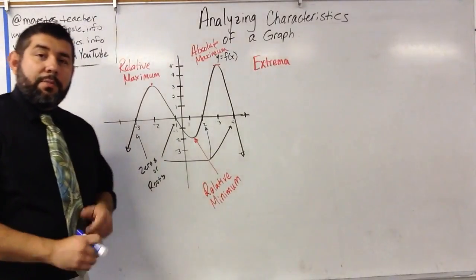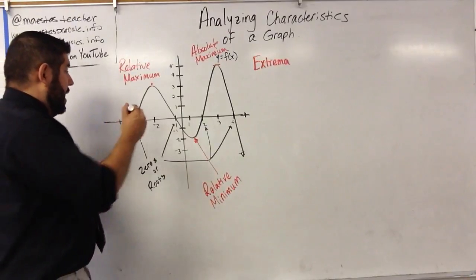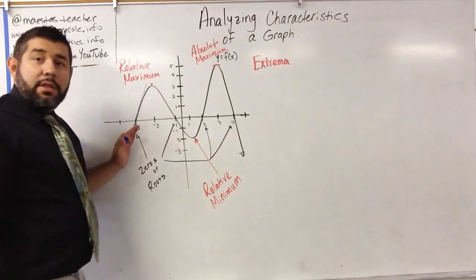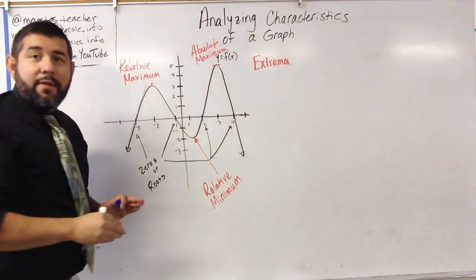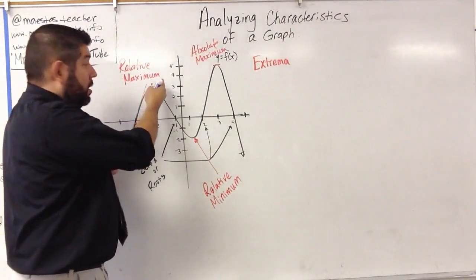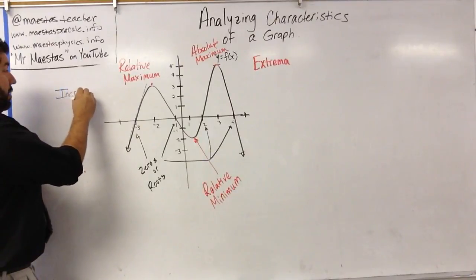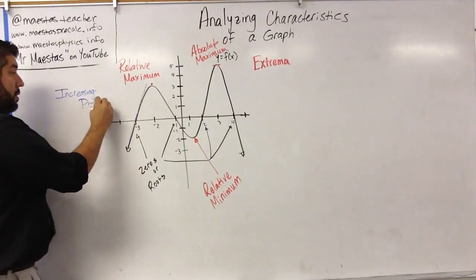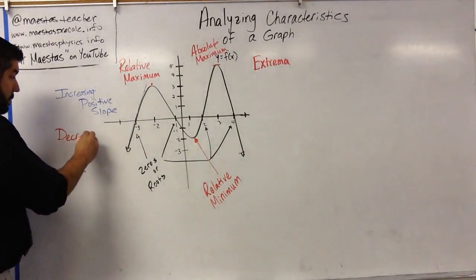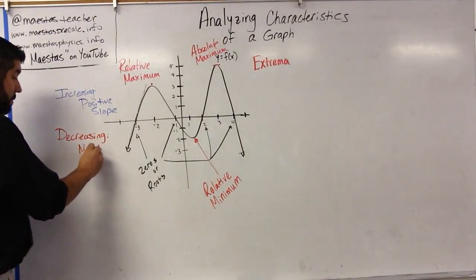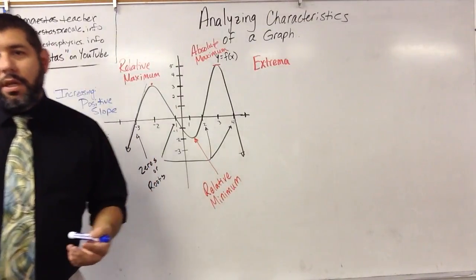A couple other things that are interesting about this graph: we look at the general trend or slope of the graph as it goes up. If we draw a tangent line, we notice the slope of the tangent line is positive. Every tangent line on this part of the graph has a positive slope. When we have positive slope, we call this part of the graph increasing. If the graph is increasing it has positive slope; if it's decreasing, it has negative slope. Let's label which parts of this graph are increasing and which are decreasing.